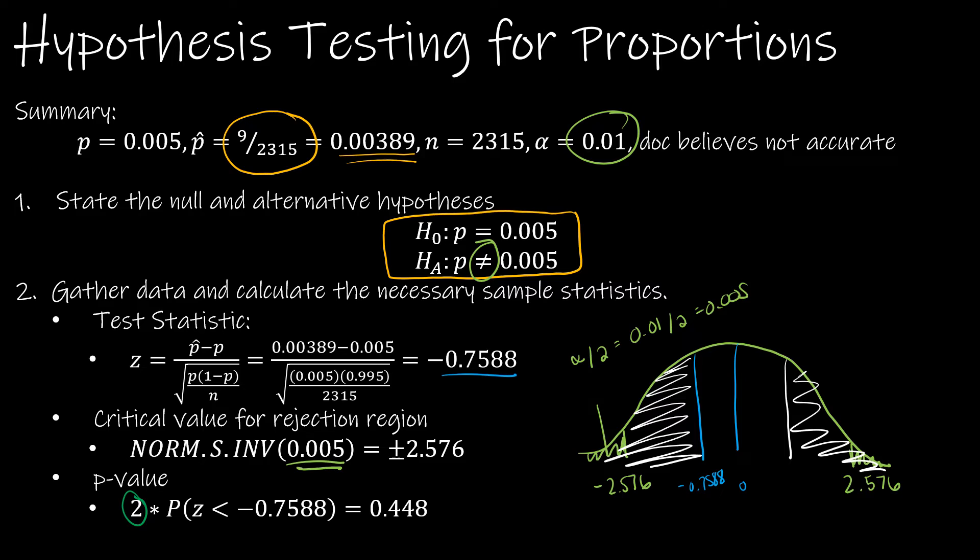So if your z-score is negative, this is how I would do this in Excel: I would take 2 times and then this would be norm.s.dist of the z-score that I found. Either way, again, this p-value is less than alpha.